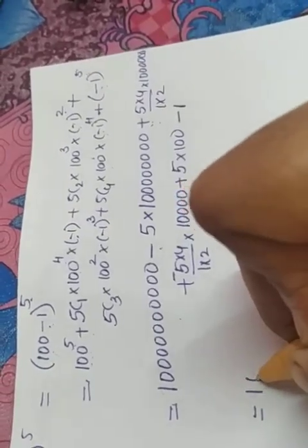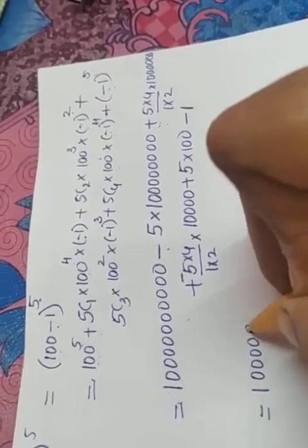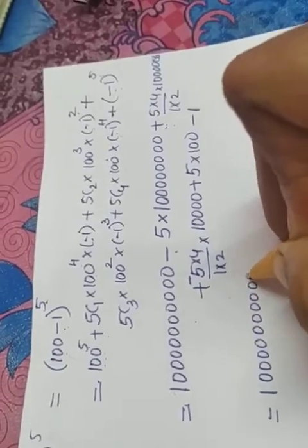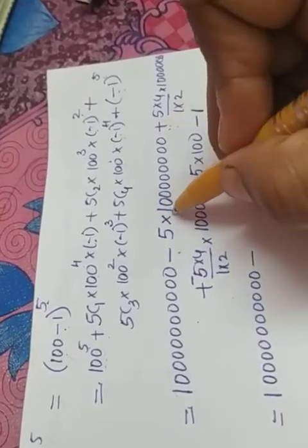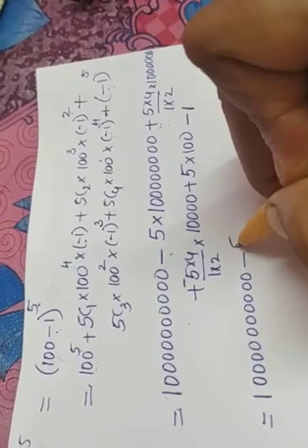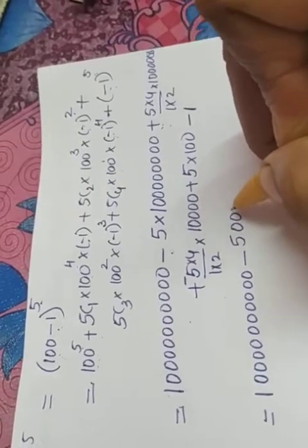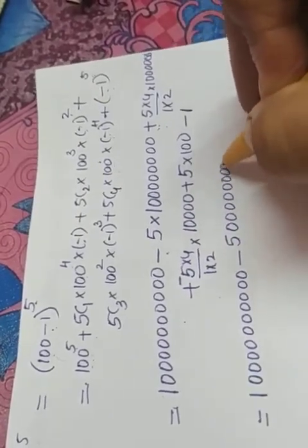So what we get is 1 and 10 zeros minus 5 and 8 zeros. 1 and 8 zeros into 5 gives you 5 and 8 zeros.